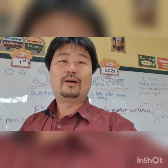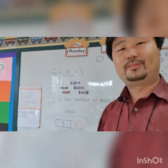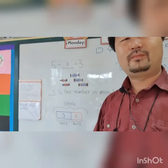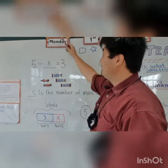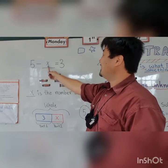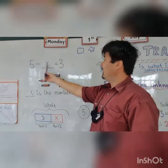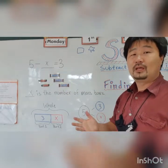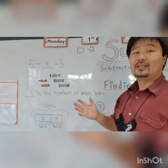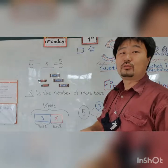On my right here I have prepared an example on the board. So the number sentence is 5 minus X equals 3. And X — what does that mean? That just means that it's an unknown. You don't know what number this is supposed to be.